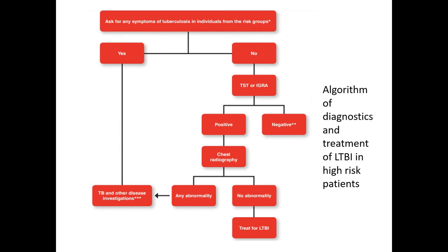Consider the following clinical algorithm. If a person from the risk group has no symptoms of tuberculosis, do skin tests or IGRAs. If positive, perform chest radiography. If there are no changes, prescribe treatment of latent infection. If there are X-ray abnormalities or if the person has suspicious symptoms, investigate further, looking for TB or another disease.